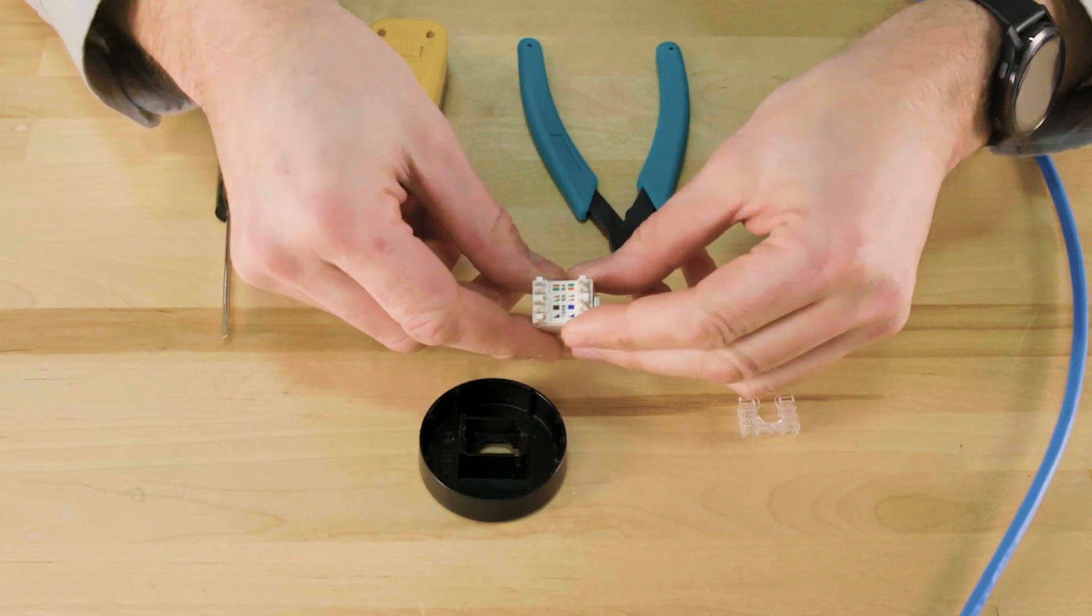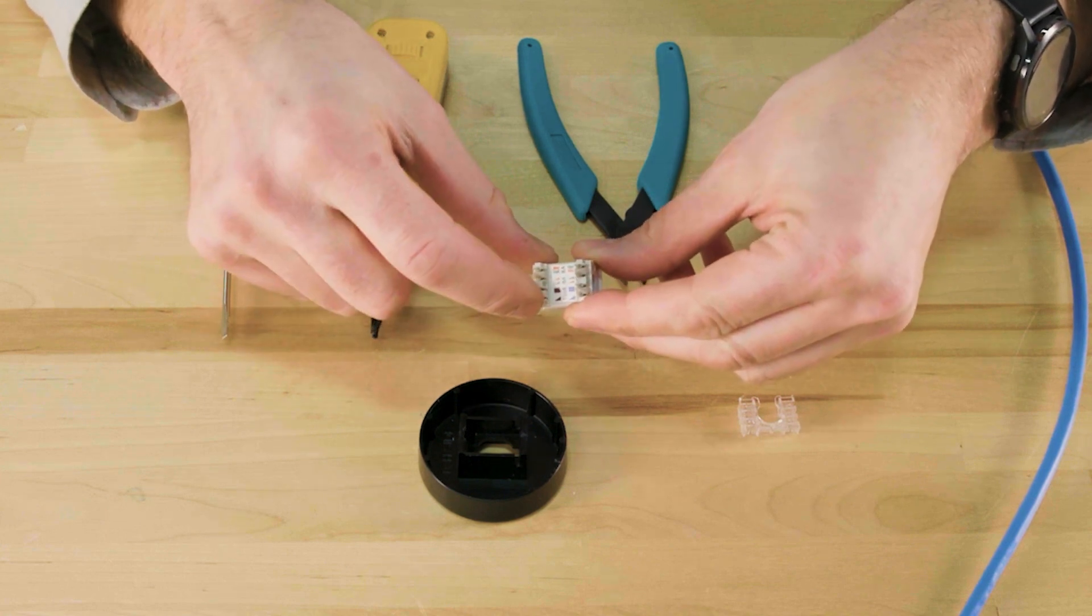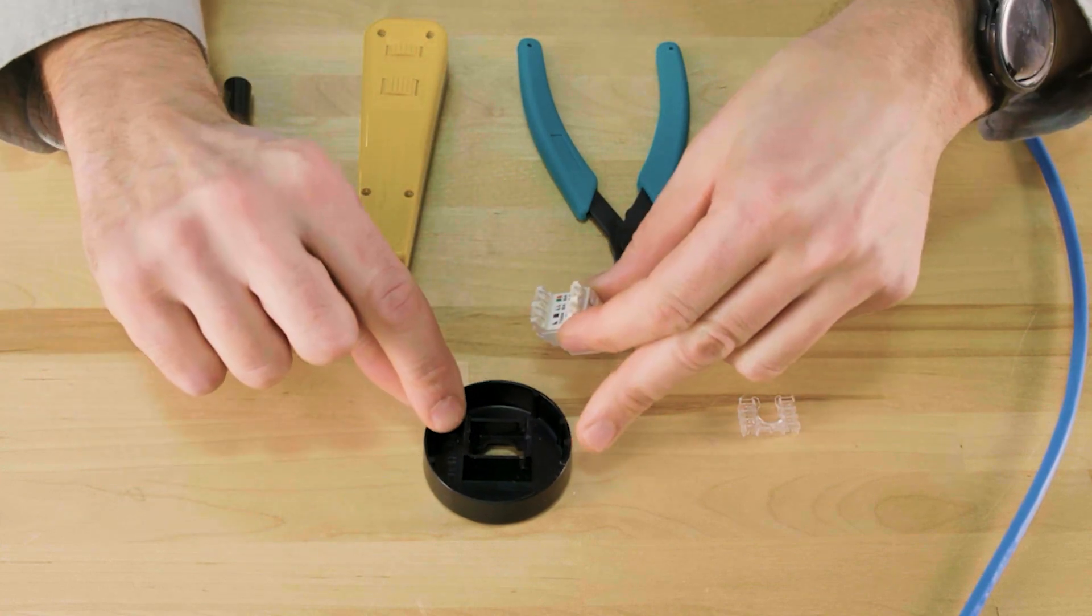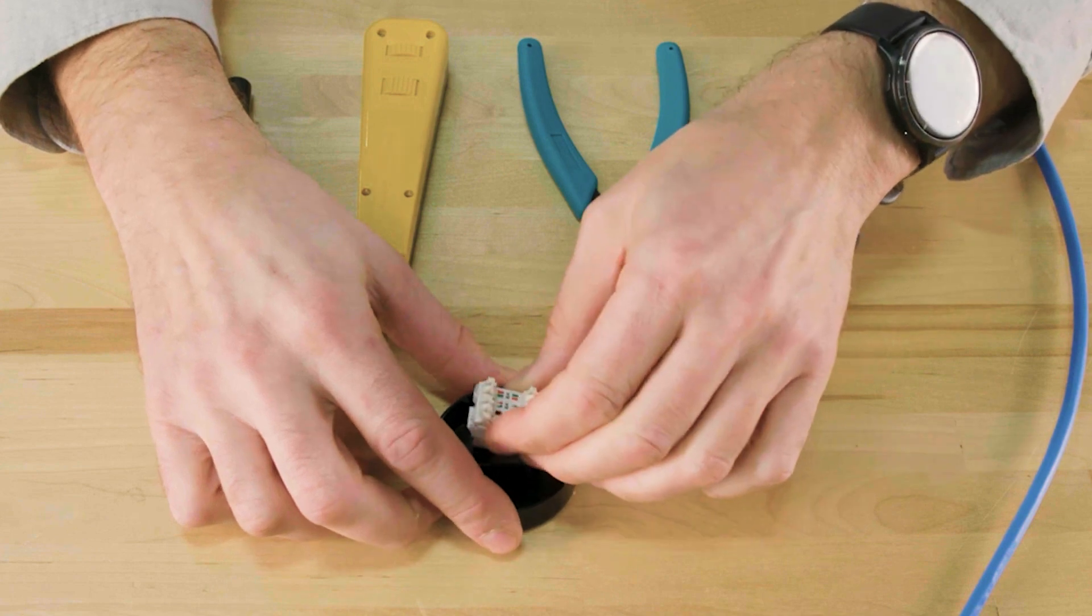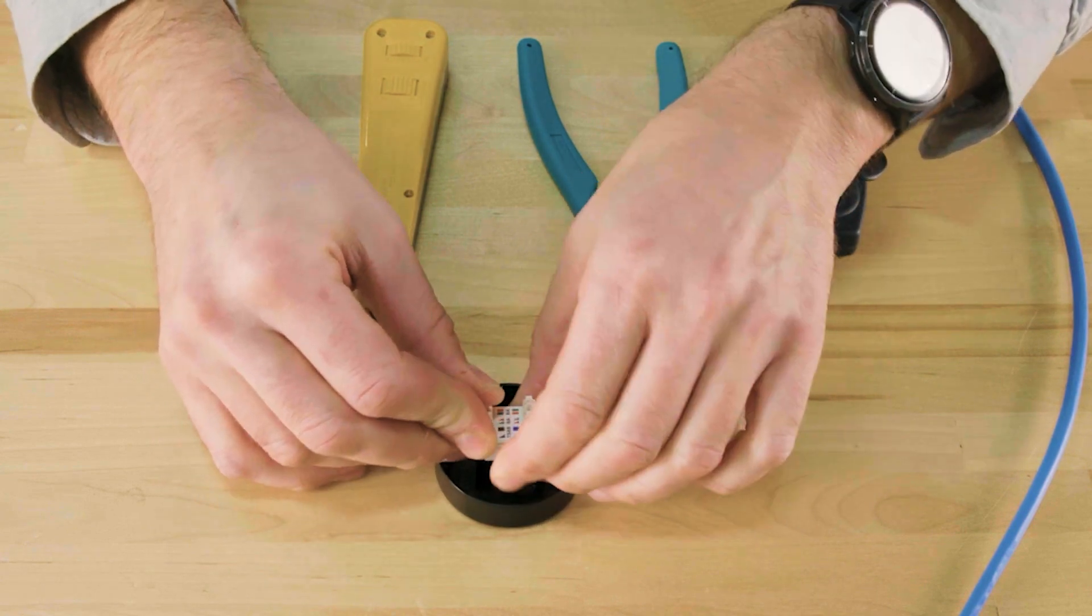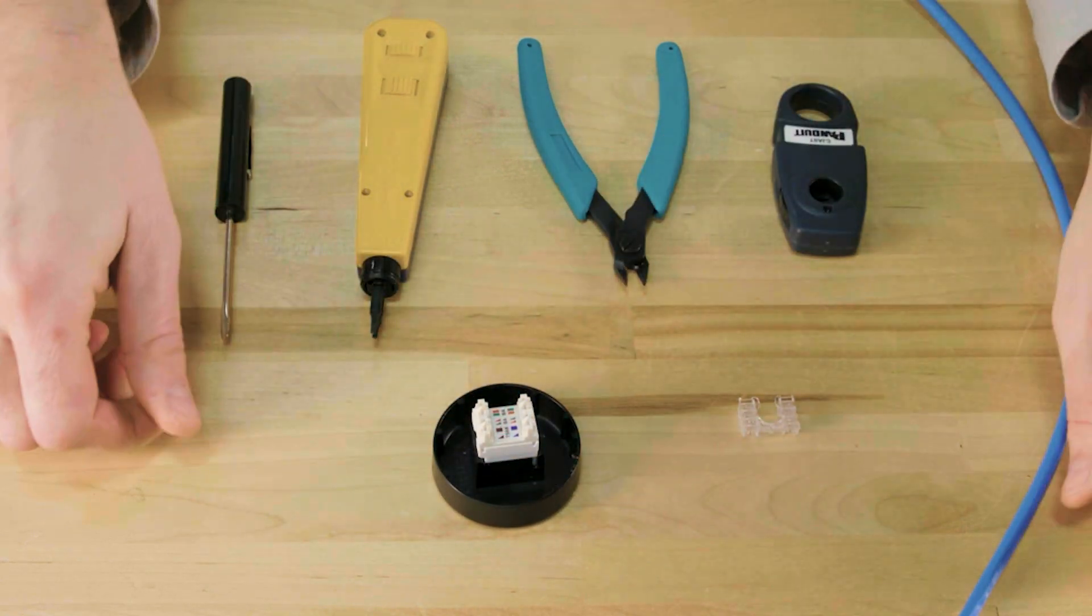To add the jack to the termination base, align the jack's small open tab to the base. The brown pair should align with the tab in the upper right as you add it to the base. Snap it in. You'll hear a click letting you know that the jack is secure on the base.